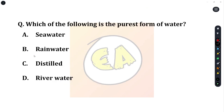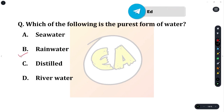Next question: which of the following is the purest form of water? Options are: sea water, rain water, distilled water, and river water. The correct answer is rain water — it is the purest form of water.